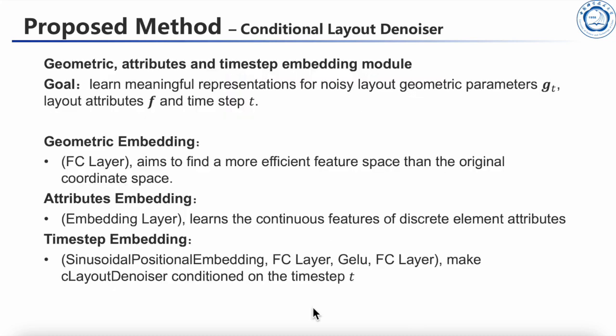Geometric embedding aims to find a more efficient feature space than the original coordinate space. Attributes embedding learns the continuous features of discrete element attributes. Time step embedding aims to make C-layout denoiser conditioned on the time step T.